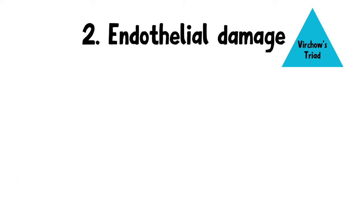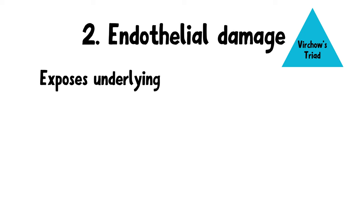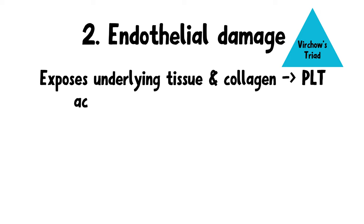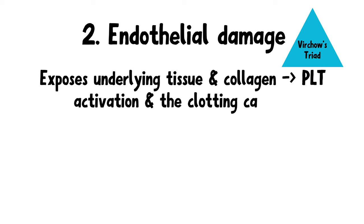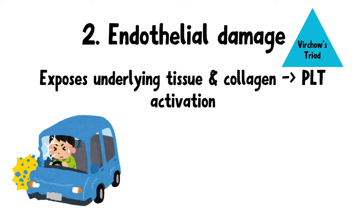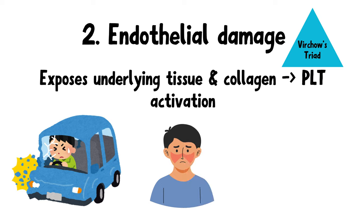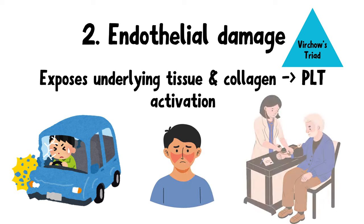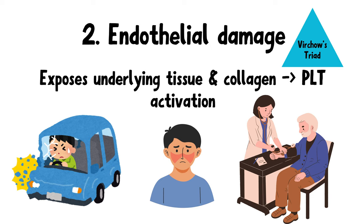The second factor is endothelial damage. Endothelial damage exposes underlying tissue and collagen, promoting platelet activation and the clotting cascade, leading to thrombus formation. This can happen in trauma, inflammatory conditions, or certain medical conditions like diabetes, hypertension, and cancer.